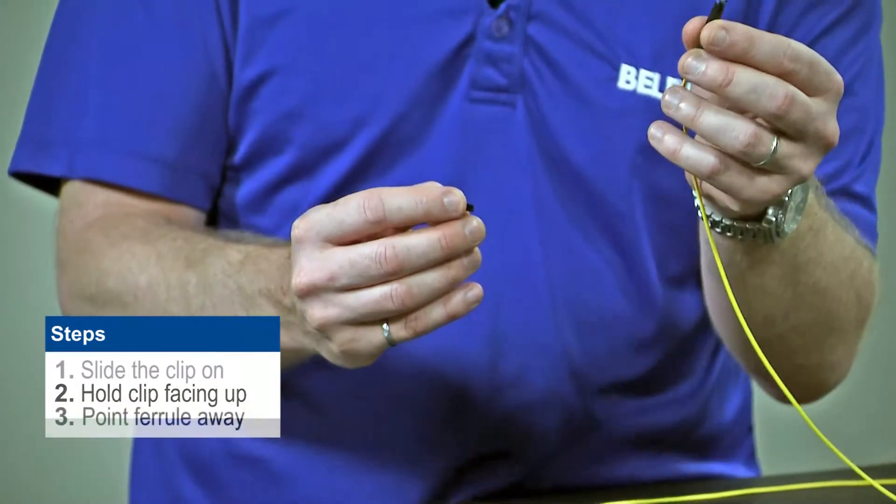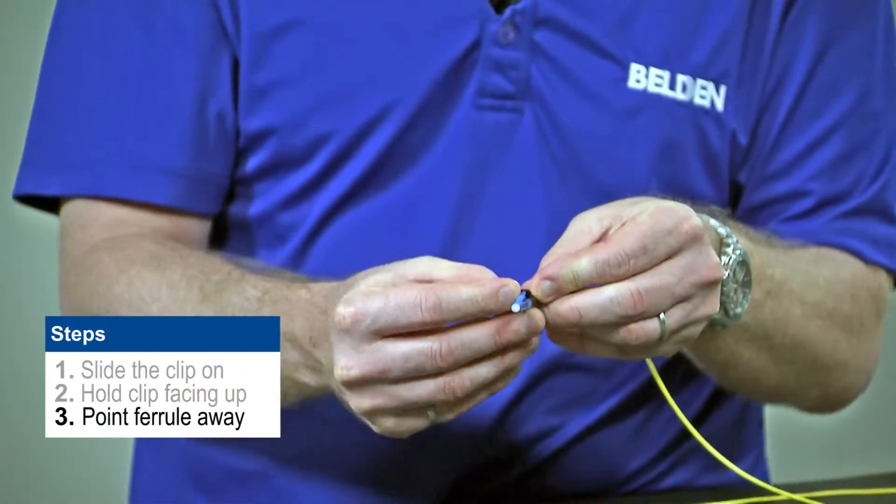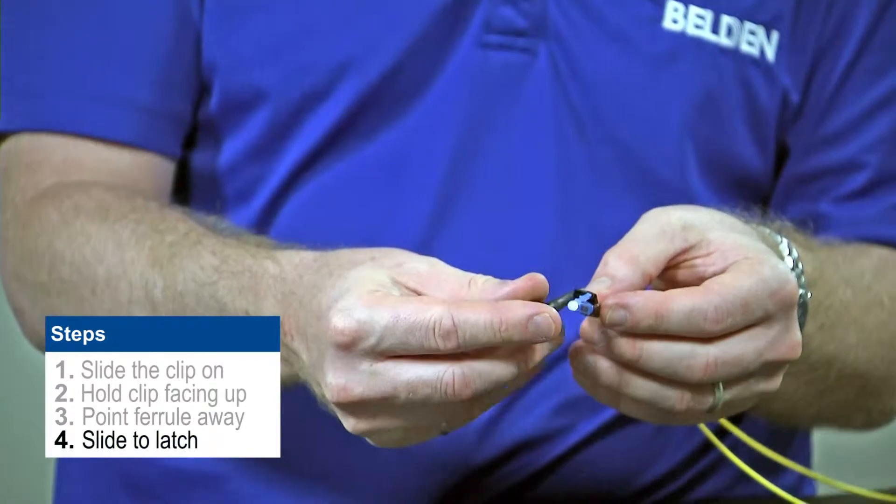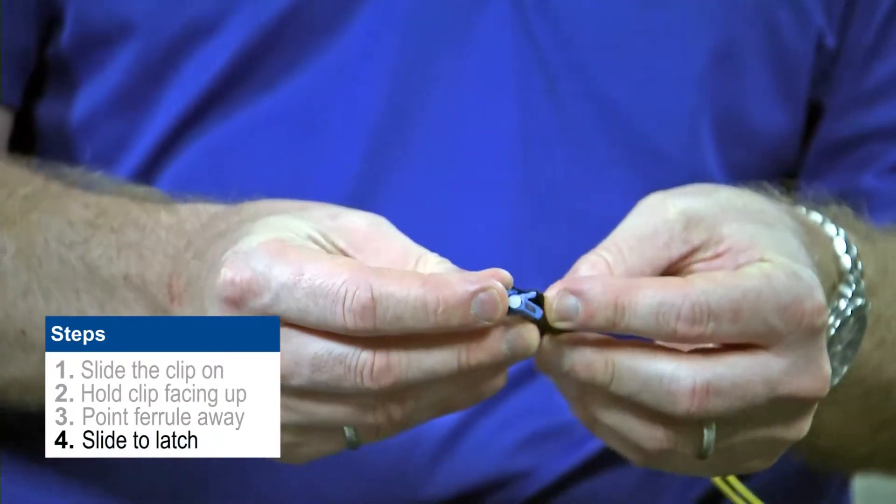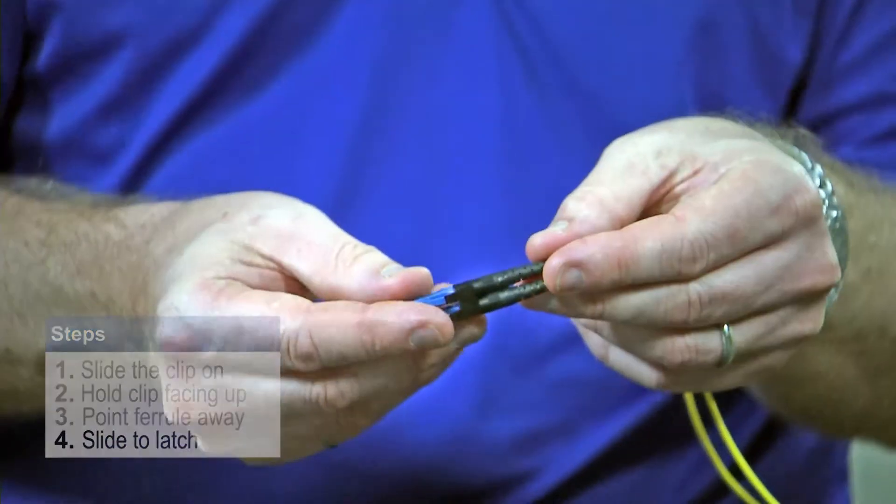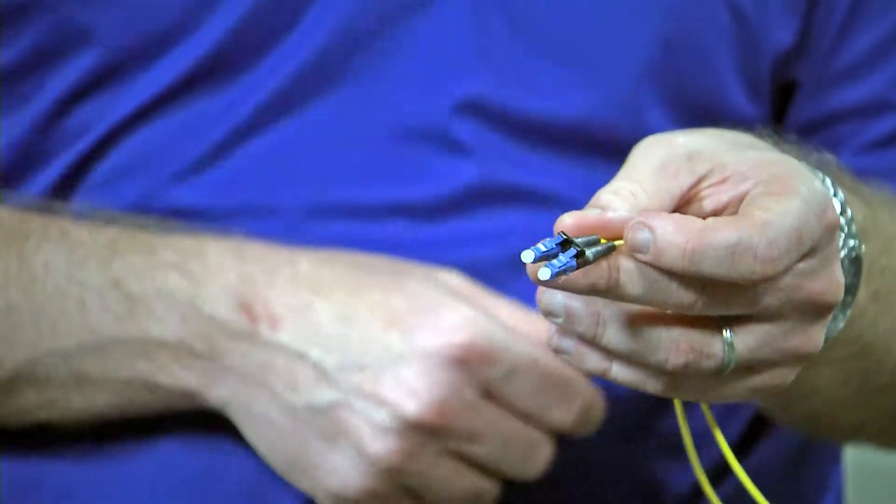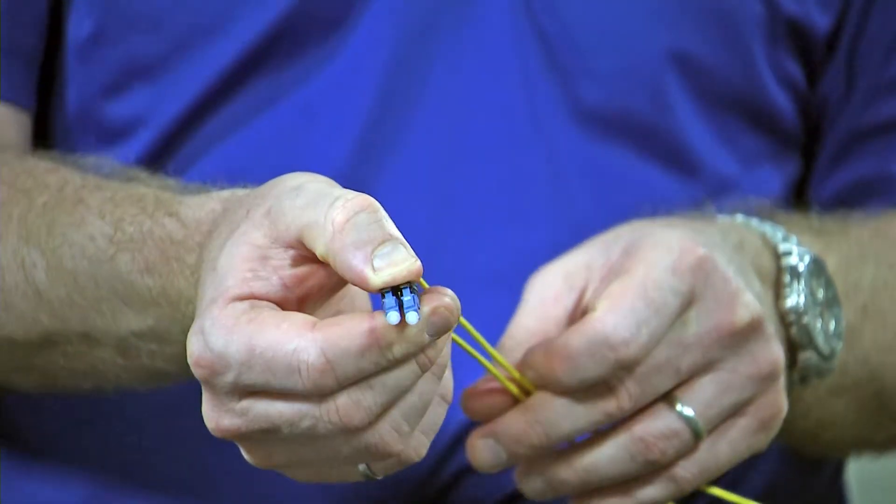Then I'm going to take my connector, point the ferrule away, and slide it on the anti-snag latch that's on the back of the connector. I'm just going to connect my two connectors together like that and I now have a functional duplex clip for LC.